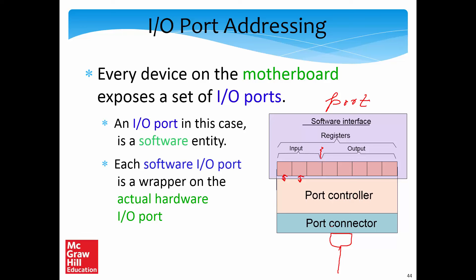There is a port controller whose job is to take data to and from these registers, do the right data conversion, and put them in the right format. There is also a port connector — a set of copper leads — such that an external connector can attach to it. The port can be thought of as both a software entity and a hardware entity. Each software IO port is a wrapper on the actual hardware IO port. The port is defined as an interface for connecting to one or many IO devices, with a metallic connector and electronics to process signals at the physical and data link layers.